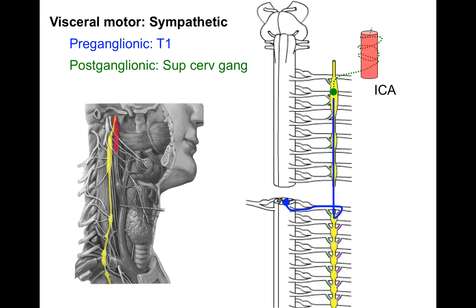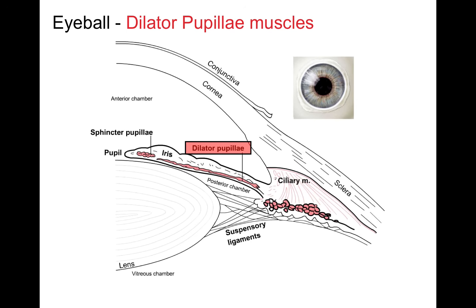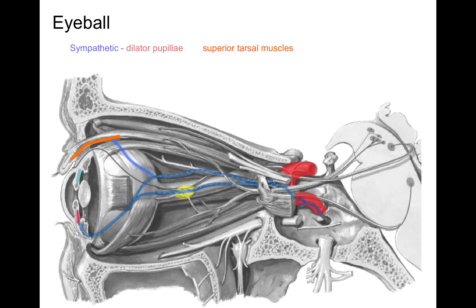Looking at the superior cervical ganglion — sympathetics to the head do a lot, but the most clinically relevant site is the eye. Sympathetics innervate the pupillary dilator muscle, causing the pupil to dilate. They also innervate the superior tarsal muscle, which is smooth muscle in the upper eyelid that helps keep your eyelid up. So sympathetics help keep your eyelid elevated as well.